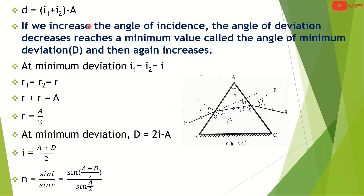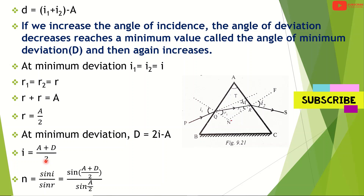If we increase the angle of incidence, the angle of deviation decreases, reaches a minimum value called the angle of minimum deviation, and then again increases. At minimum deviation, i1 equals i2, so we write i1 plus i2 equals 2i. Also R1 plus R2 equals A, so R1 equals R2 equals A/2. At minimum deviation D, we get D equals 2i minus A, so A plus D equals 2i, meaning i equals (A plus D) divided by 2.